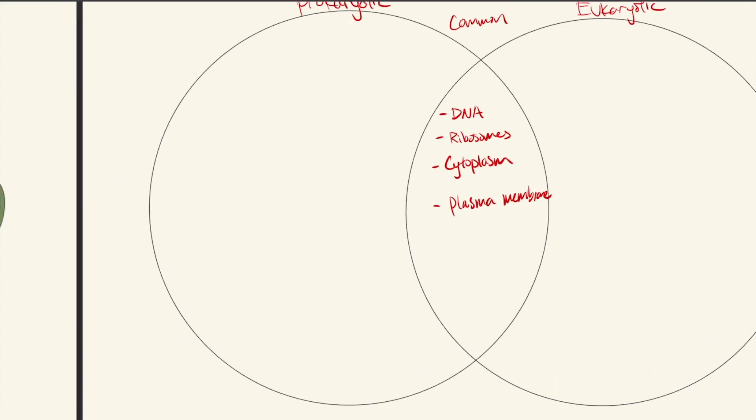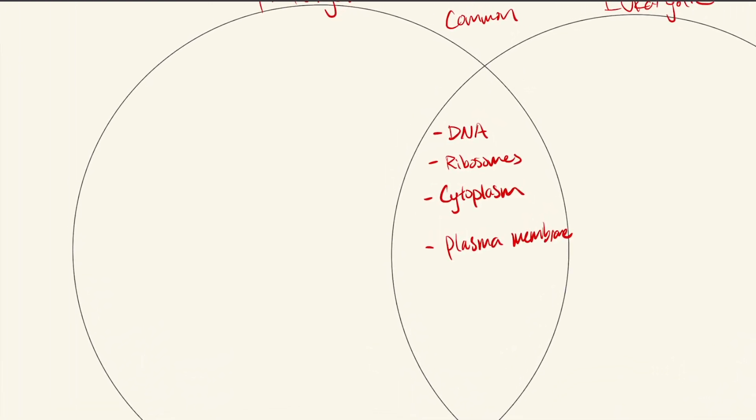And then we can go into what prokaryotics have that eukaryotics don't. So prokaryotic cells are much smaller, they're much simpler, and much, much older. Prokaryotic cells also have no organelles. And they're also single-celled, and also have single-cellular chromosome.